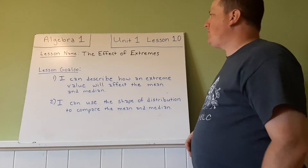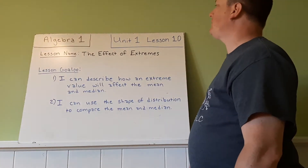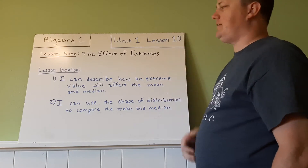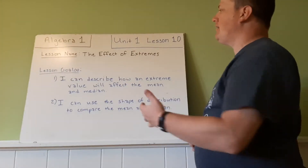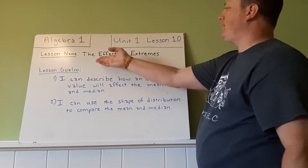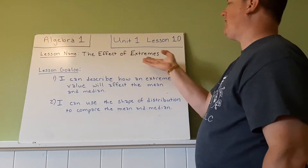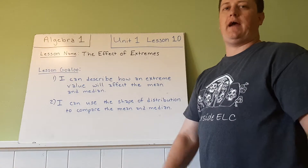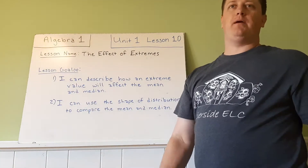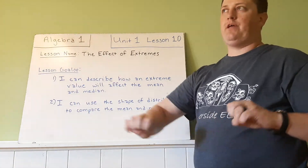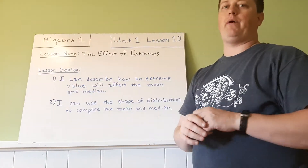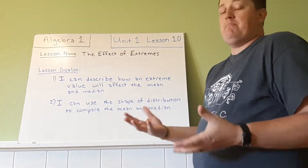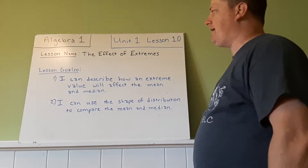Okay, October 1 students, we're here to look at Unit 1, Lesson 10. The name of this is the effect of extremes. We're looking at the minimums and maximums that are far away from the main part of the data.